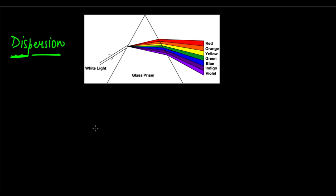If you take a glass prism, and we've seen how it refracts light — if you take white light, which is nothing but sunlight, and you pass it through a glass prism, you will observe that at the other end of the prism you will see a band of seven colors.